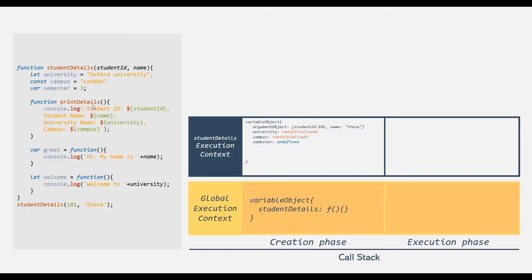We also have a function declaration. In the case of a function declaration, a property gets created on the variable object with that function name and it gets assigned with the definition of that function — so the definition will be assigned to the printDetails property. Then we have two function expressions. A function expression is simply a function assigned to a variable. So greet and welcome are ultimately variables, not functions. So greet will be assigned undefined, and welcome will be set to uninitialized. In this way, the variable object for this function will be created, storing all the function and variable declarations as its properties.